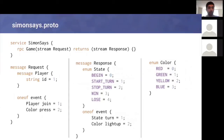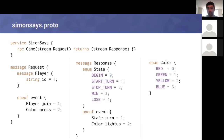We had a service called Simon Says with a single RPC called 'game.' It takes in a stream of requests and returns a stream of responses. A request has a player or a color (red, green, yellow, blue), and a response returns one of a state or a color — states being begin, start turn, stop turn, win, lose. First, someone sends their player ID to join. When the server has two people connected, it sends a 'begin' response to both clients and assigns turns. The player whose turn it is can press a color, which does a full round trip to the server before lighting up on both clients.